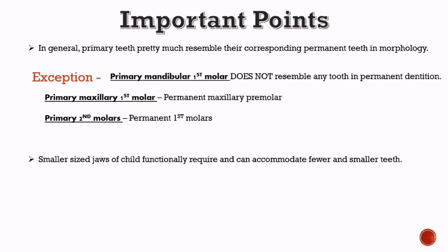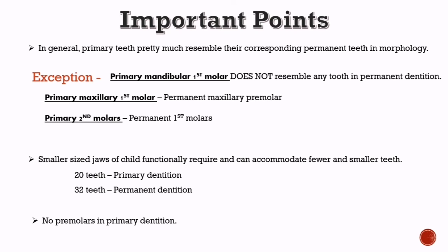Small-sized jaws of the child functionally require and can accommodate fewer and smaller teeth. So there are only 20 teeth in primary dentition as against 32 in the permanent dentition. There are no premolars in the primary dentition. Furthermore, there are only two molars — the first and second primary molars — in primary dentition. In other words, there are no third molars in primary dentition.